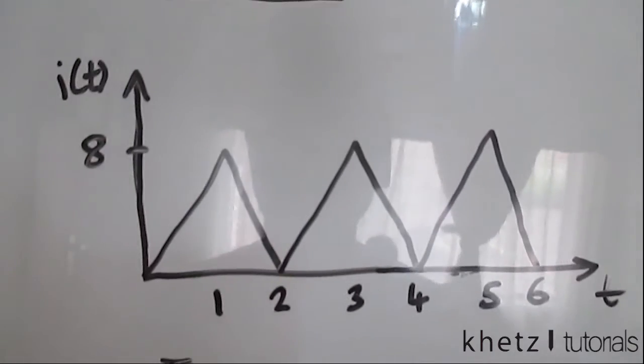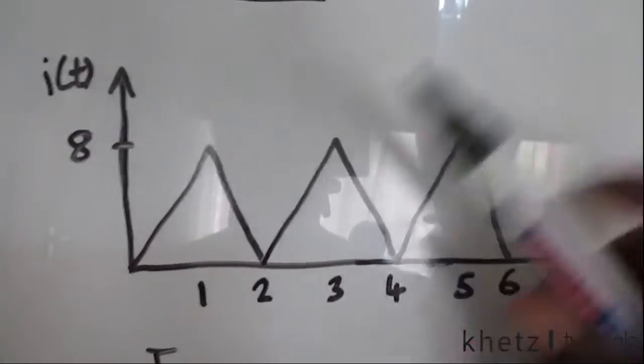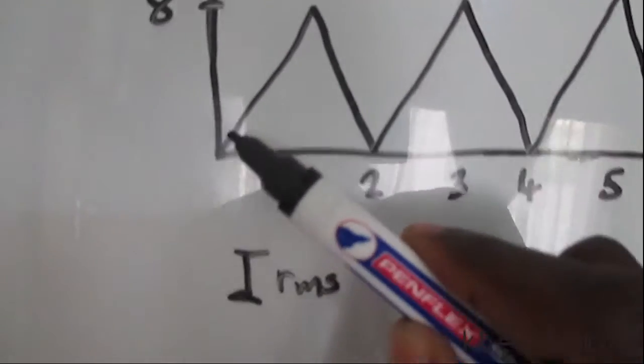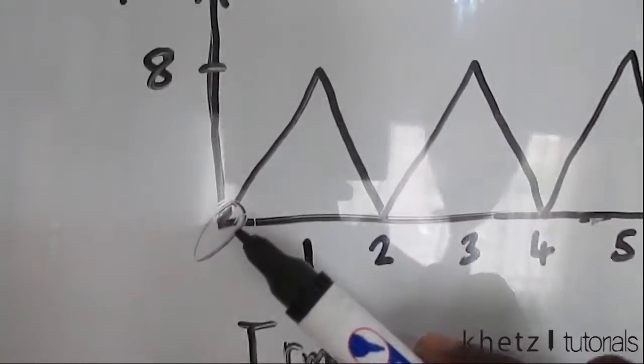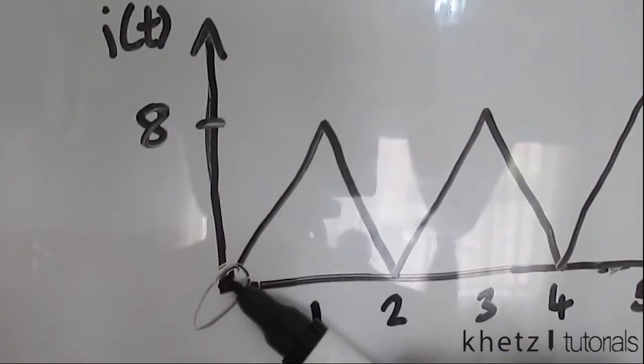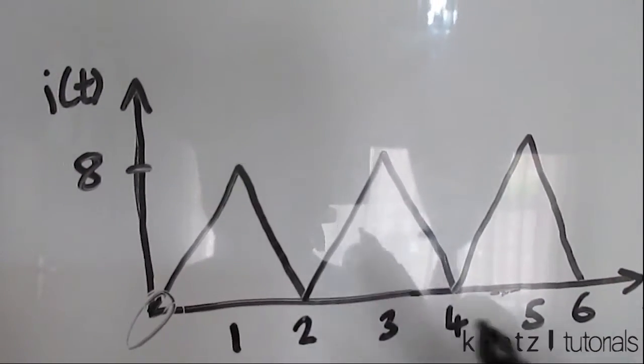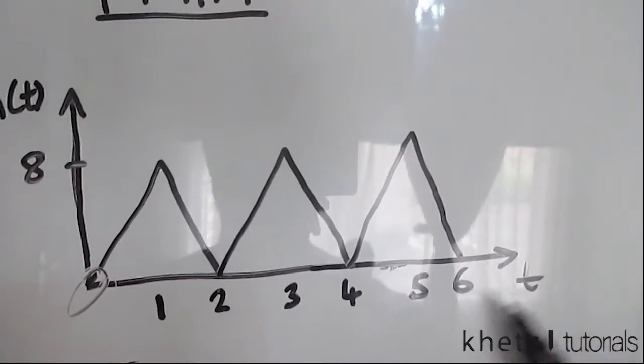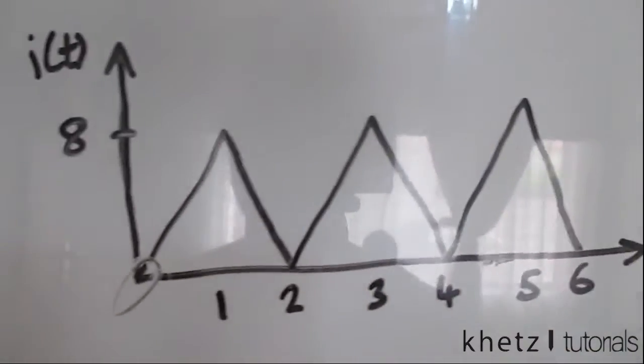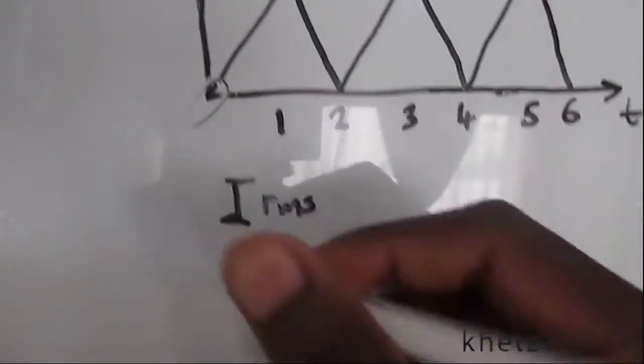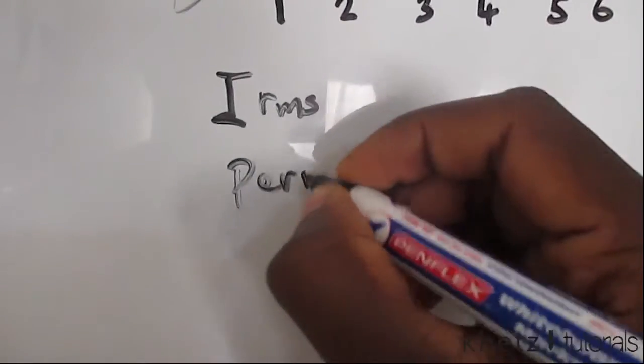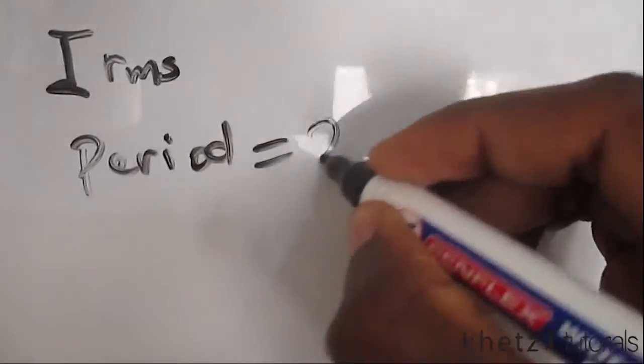The first thing to do is to find the period of this periodic signal. As you can see, let's take this point as a reference. Where do we see this point occurring again? It occurs after two seconds or whatever the unit of t is. So the period is two.